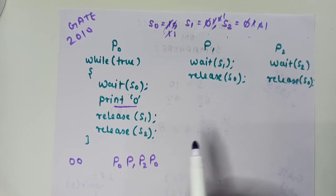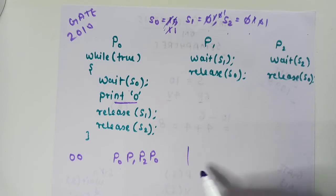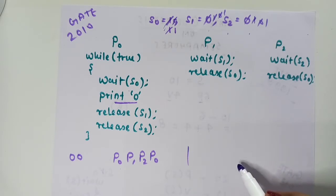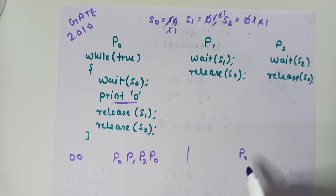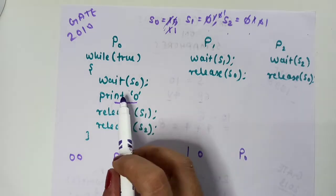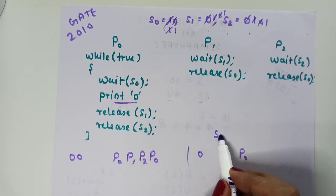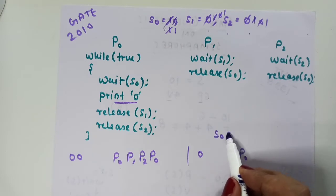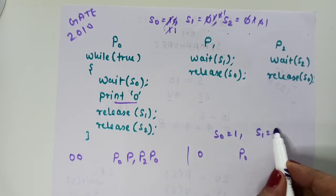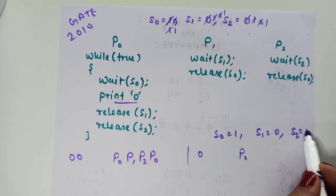So in this order of execution, we are getting 0 printed 2 times. We can take another order: if we first execute P0, it will print 0. After that, S0 remains 1, S1 becomes 0, S2 becomes 0. P0 has decremented S0 and printed 0, then released S1.